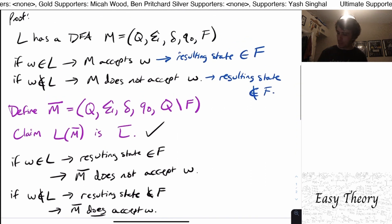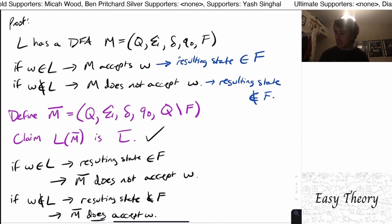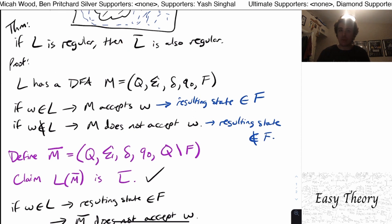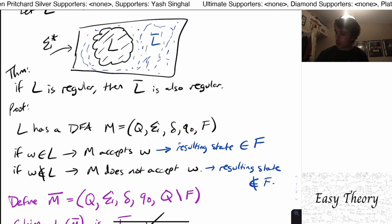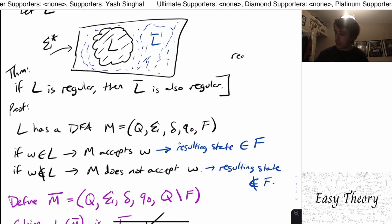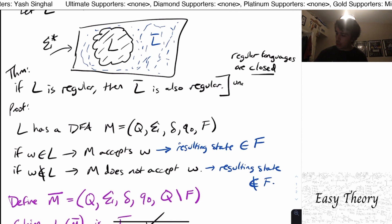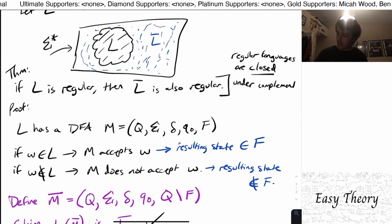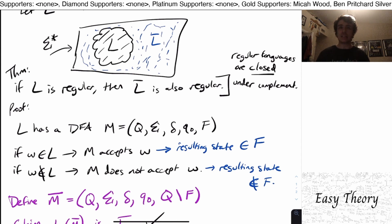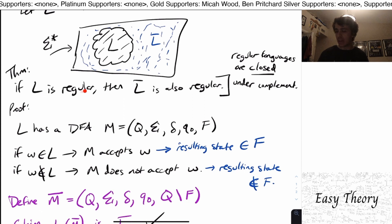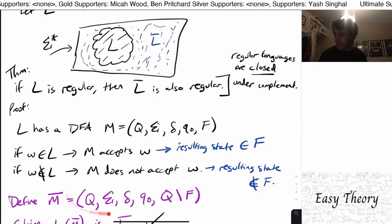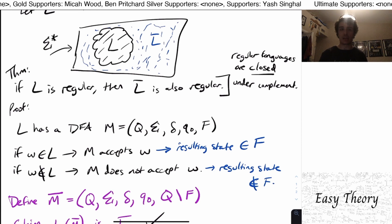We found a DFA for the complement language, which is exactly what we wanted to show. Another way of saying this is that regular languages are closed under complement. That means if we take a regular language and apply the complement operation to it, we stay within the set of regular languages. If L is regular, then L-bar is also regular — so the set of regular languages is closed under complement.